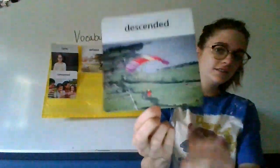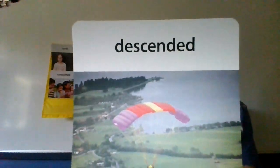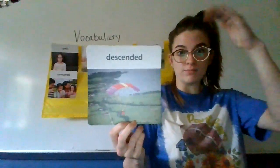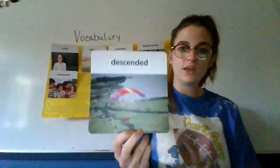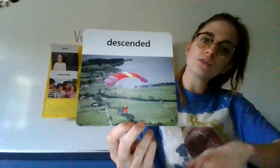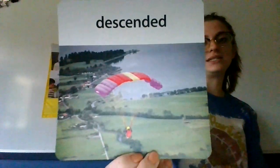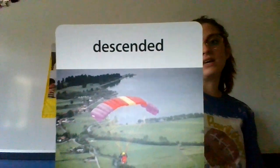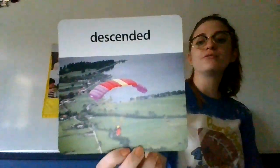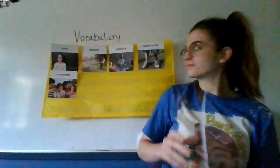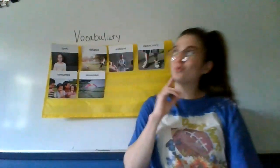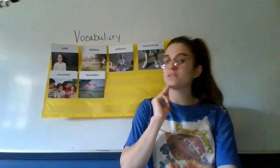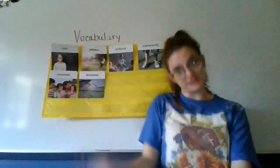Our next word is descended. Now y'all might be familiar with a show called Descendants. A descendant is someone born after — so you are the descendants of your parents and your grandparents, born after or later. When you descend, you are lowering down to the ground. This person's in a parachute and they're descending. If something descended, it moves downward. As the skydiver descended through the air, the open parachute looks like a beautiful rainbow. So airplanes descend, rain descends from the clouds. If you throw something up, it will descend or come back down.